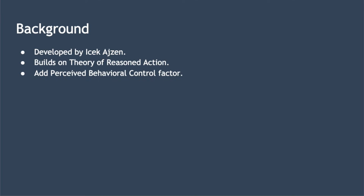Planned behaviour theory was proposed by Isaac Ayssen and improves on the theory of reasoned action, which he developed in 1980 along with Martin Fishbane. The theory of reasoned action meant that if someone was to evaluate a behaviour with a positive attitude and think that significant others like friends, peers and family want them to perform that behaviour, then there's a higher intention or motivation to carry out that behaviour. Ayssen improved the theory of reasoned action by adding a third influencing factor — perceived behavioural control — which improved the predictability of the model.